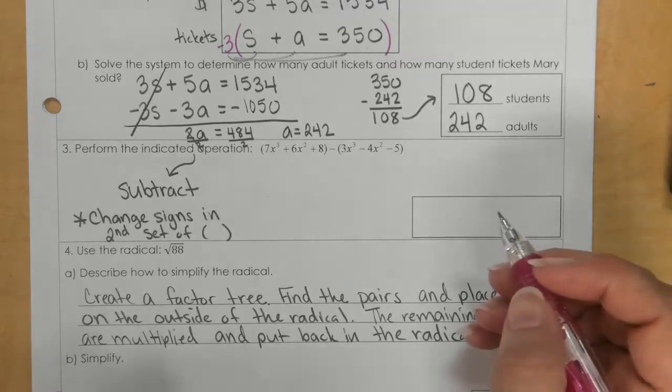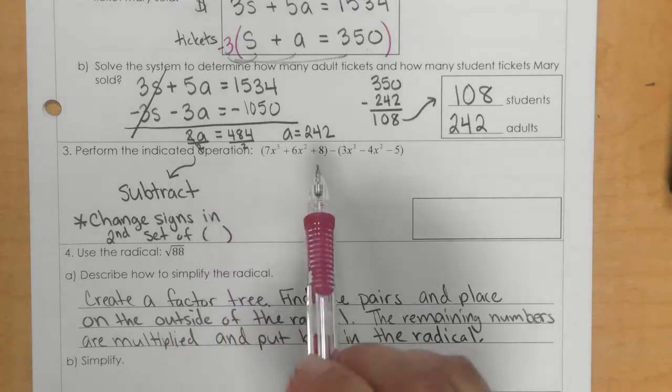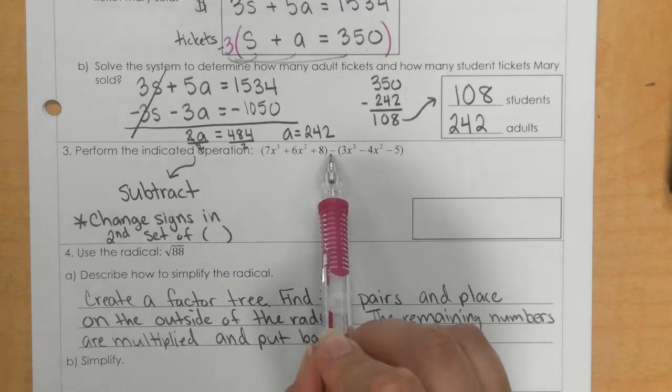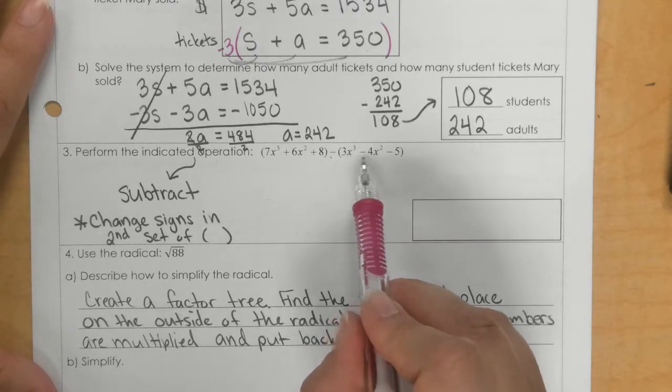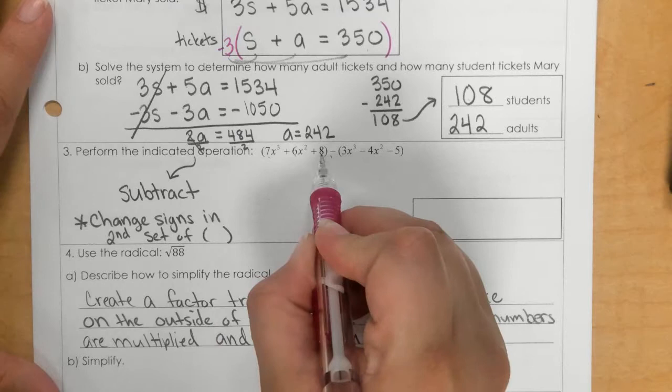For number three, it says to perform the indicated operation. If I look between the parentheses, we have a subtraction sign, which means change the signs in the second set of parentheses. So this part would stay the same.